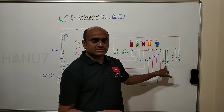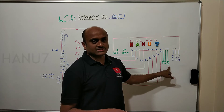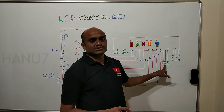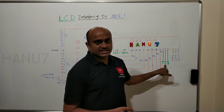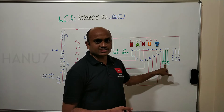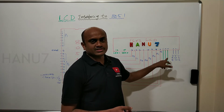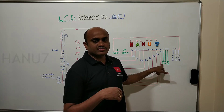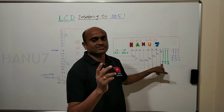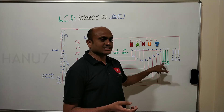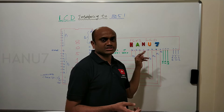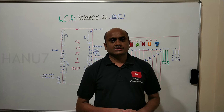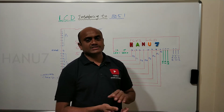Whenever we enter command mode or display mode, we have to enable it. The Read/Write pin will be connected to 0 (write), while the Enable pin will go high then low — it toggles 1 then 0 when entering command mode, and similarly in display mode. We will see this in detail in the programming part, where I will explain how to program the LCD.